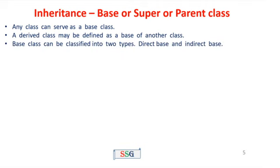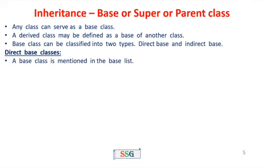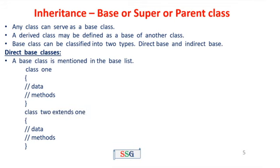A base class can be classified in two types: one is direct base, and the second one is indirect base. For the direct base class, a base class is mentioned in the base list. For example, class one contains data and methods. Class two extends one — here two is the derived class and one is the base class. Class two also has data and methods. In this case, class one is a direct base class for class two.